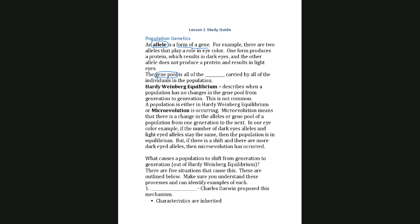We all have thousands of genes in our chromosomes, and with each gene there's more than one form that gene can exist in. For example, with eye color there's an allele for dark eyes and an allele for light eyes. The allele would be whether you have two dark-eyed forms, two light-eyed forms, or one of each. You can think of it with hair too — curly, wavy, or straight.